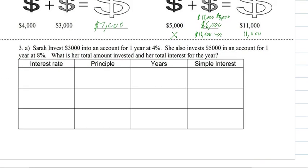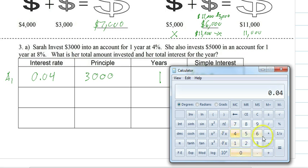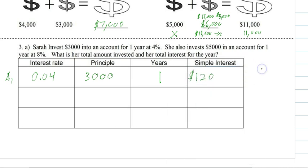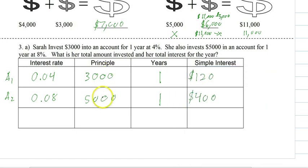Sarah invests $3,000 in one account for one year at 4%. Her interest is 0.04 times $3,000, which gives $120. In her second account, she invests $5,000 at 8% for one year, which gives $400 in interest. That gives a total investment of $8,000 and a total interest of $520.